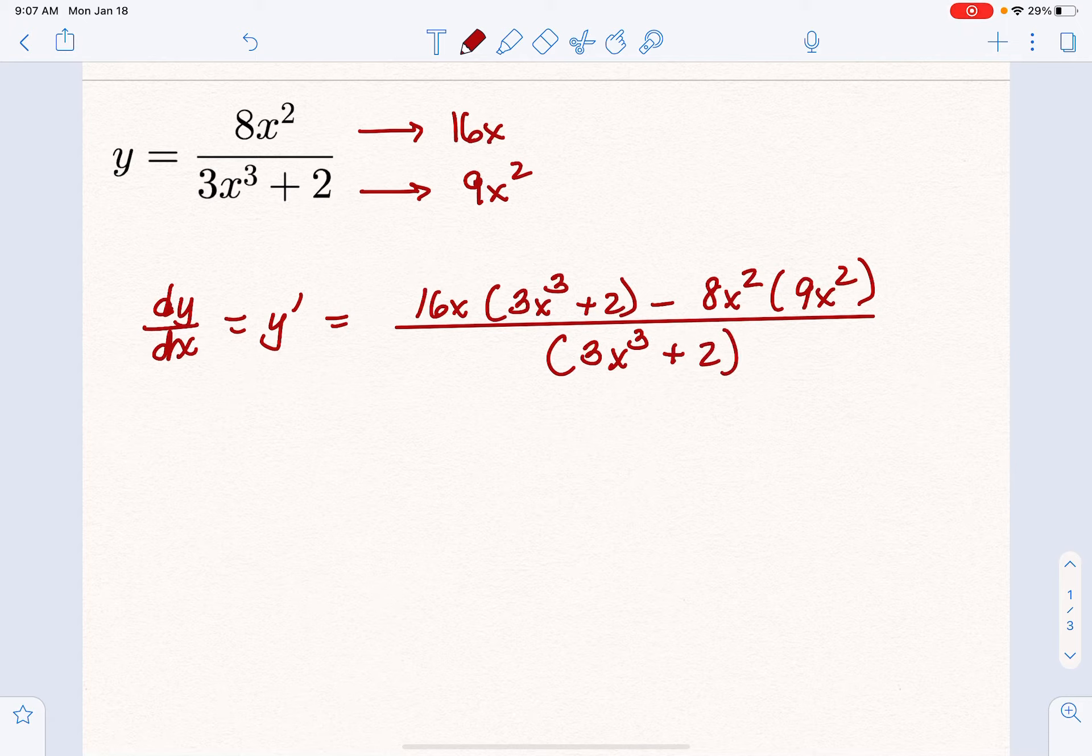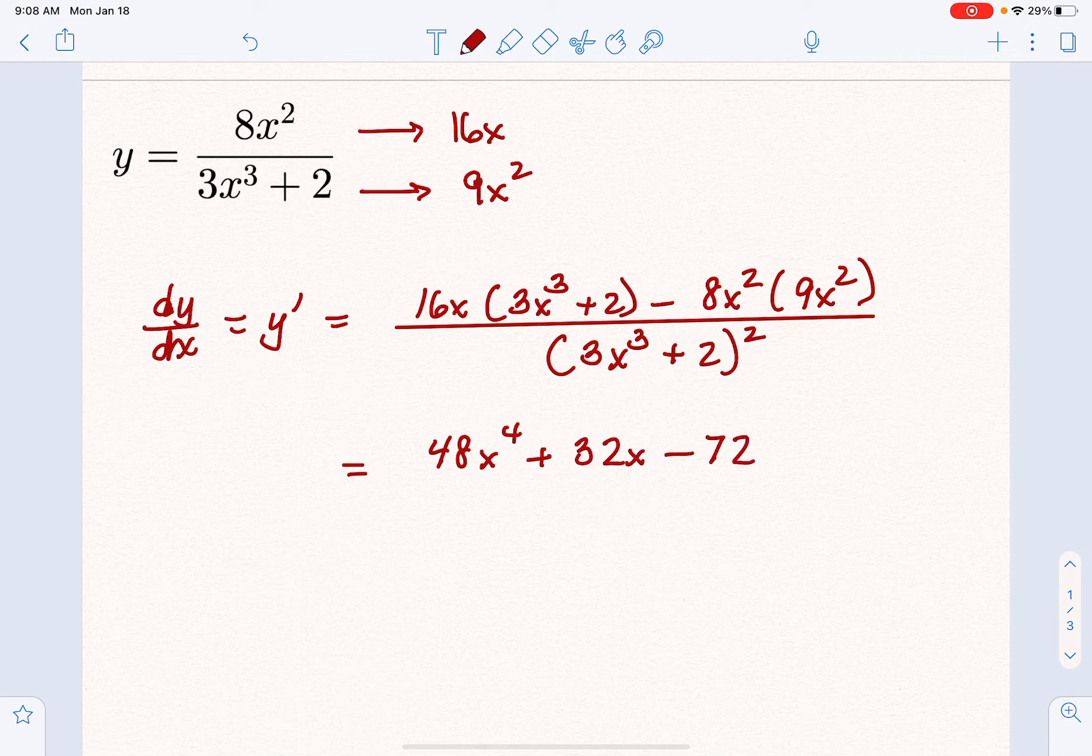As far as the calculus goes, we have used the calculus. Now we're just using algebra. So multiply everything out in the numerator to simplify. We get 48x⁴ + 32x minus 72x⁴, all over (3x³ + 2)².